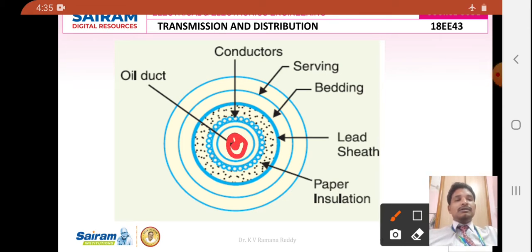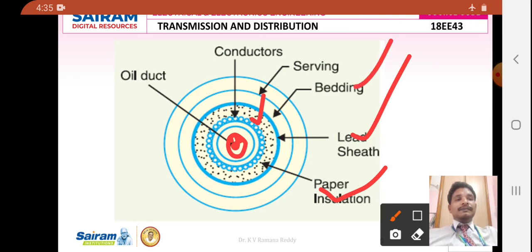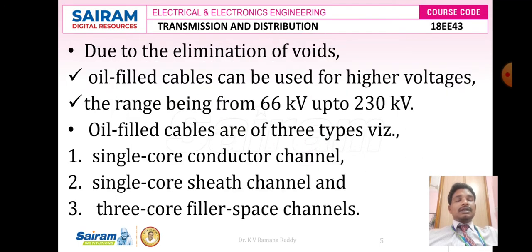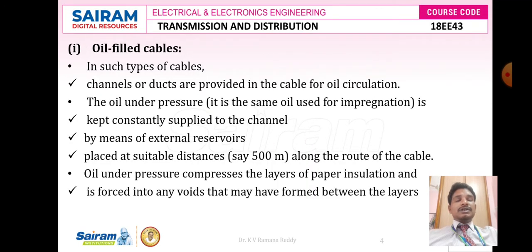In oil filled cables, the center of the conductor or the core of the conductor consists of an oil channel or oil duct to pump the oil. It is surrounded by the conductors, and again the conductors are surrounded by paper insulation which is called as impregnated paper. Again the paper insulation is covered by lead sheath, and the lead sheath is again covered by bedding and serving. The oil used is mineral oil — an insulating oil which is pumped at a high pressure of atmospheric pressure like 12 to 15 degrees centigrade of atmospheric pressure.